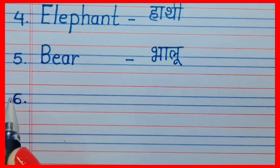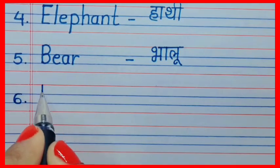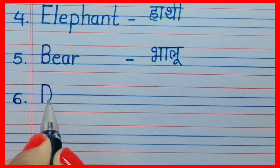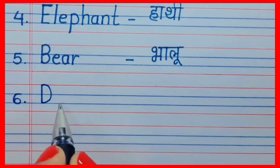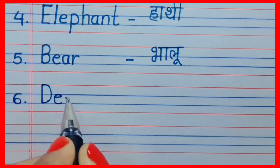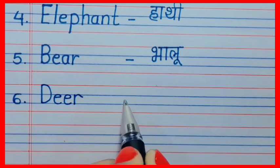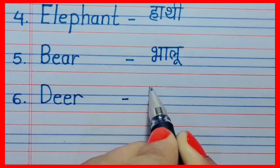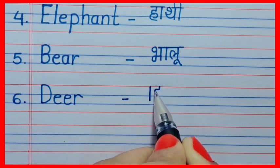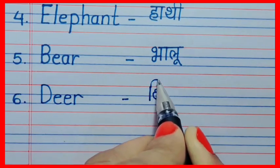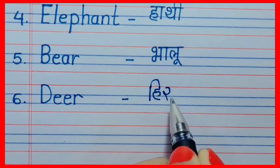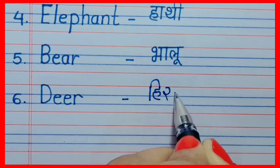Next is D-E-E-R, deer. Deer means hiran.